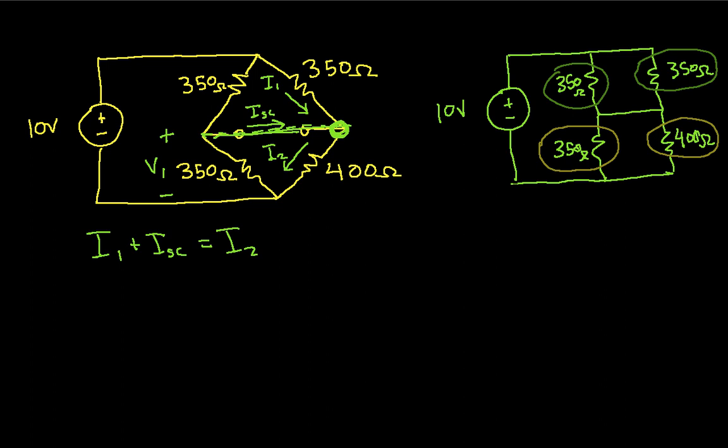The 350 in parallel with 350 gives me 175 ohms. If I have two resistances in parallel that have the same resistance, then the equivalent parallel resistance is just half their resistance. 350 in parallel with 400 gives me this one I'll have to work out. So it's going to be 350 times 400 divided by 350 plus 400, which then gives me an equivalent resistance of 186.67 ohms.